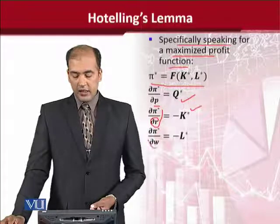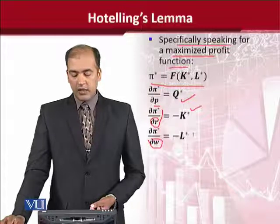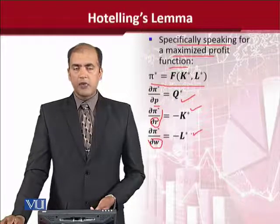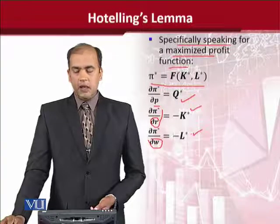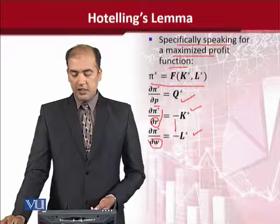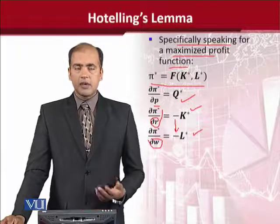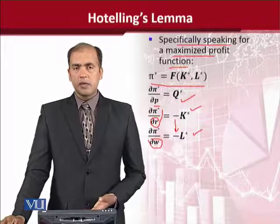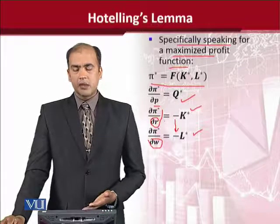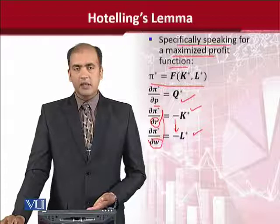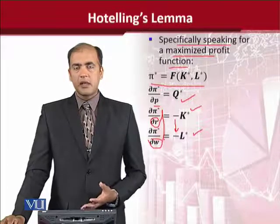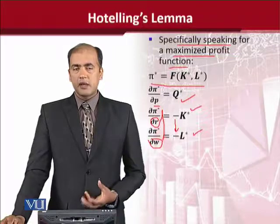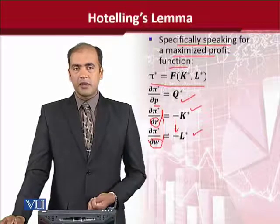And for labor, if we do this calculation, then we will get the demand for labor. However, this negative sign may be disturbing. We will keep this negative sign on the left-hand side, because capital cannot be negative, neither can labor. It is written because we started from the left-hand side, but actually the result should be positive, showing the demand function of labor and capital.